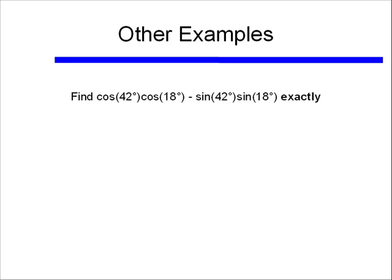You could also be given a question like this, which looks pretty complicated at first glance. Finding cosine of 42 degrees times cosine of 18 degrees, minus sine of 42 degrees times sine of 18 degrees, exactly — doesn't seem possible, since we don't know cosine or sine of 42 degrees and 18 degrees. This is when we're going to have to use our sum and difference identities backwards.